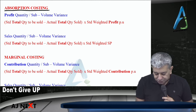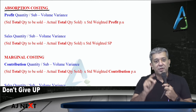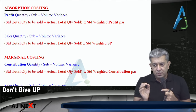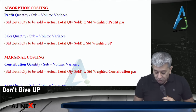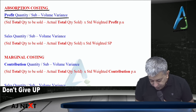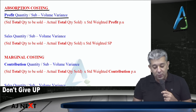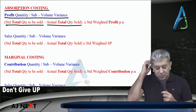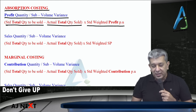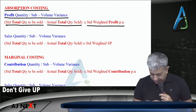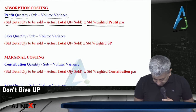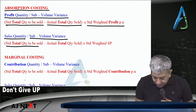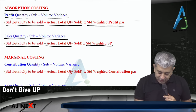Variances are related when the brackets are the same — that's all. Under absorption costing, profit quantity variance (also called profit sub-volume variance) is computed as: total company units that should have been sold minus total company units sold, into standard weighted average profit per unit. Sales quantity variance (also called sales sub-volume variance) — the bracket stays the same, but outside you multiply by standard weighted average selling price.